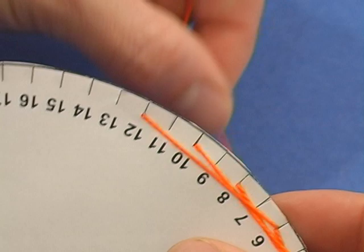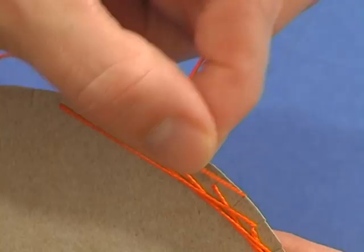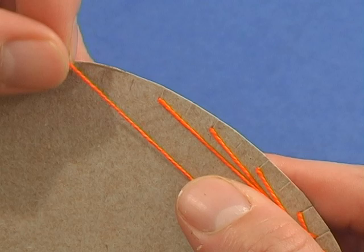Do you notice that the end of the string is skipping one every time, but the beginning isn't? You can use this pattern to do it without even having the numbers available.